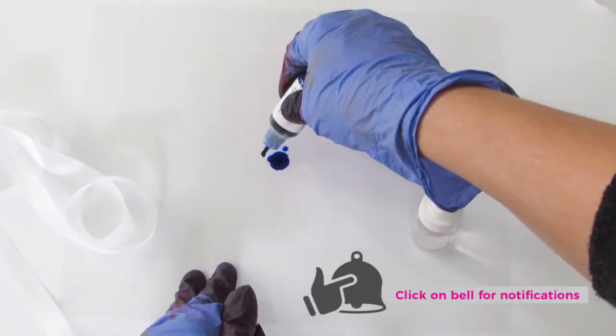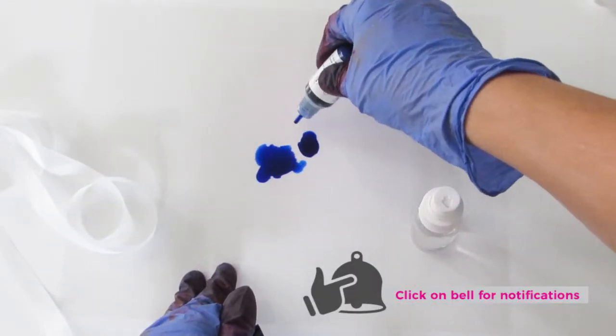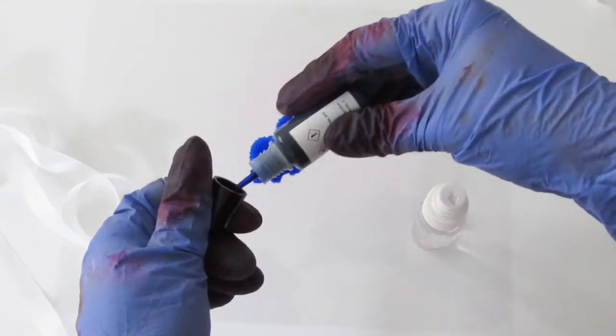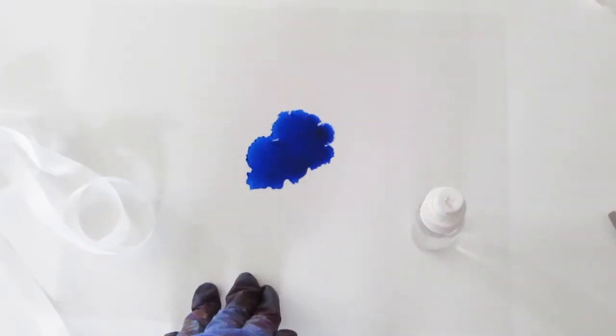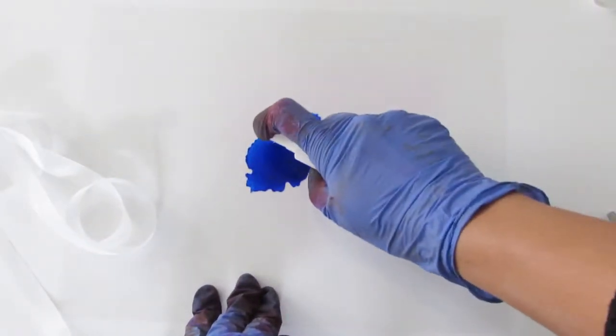I recommend you use gloves because alcohol ink has a very strong pigment and it will stain your fingers. So I am pouring drops right now on an acetate sheet. I decided to use acetate because it's cheap, I can wipe it off and reuse it.